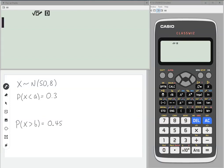In this video we're going to be looking at using the inverse norm function. So we've got a normal distribution with a mean of 50 and a variance of 8. If the probability of X being less than a is 0.3, what is the value of a? That is what I want to calculate here.